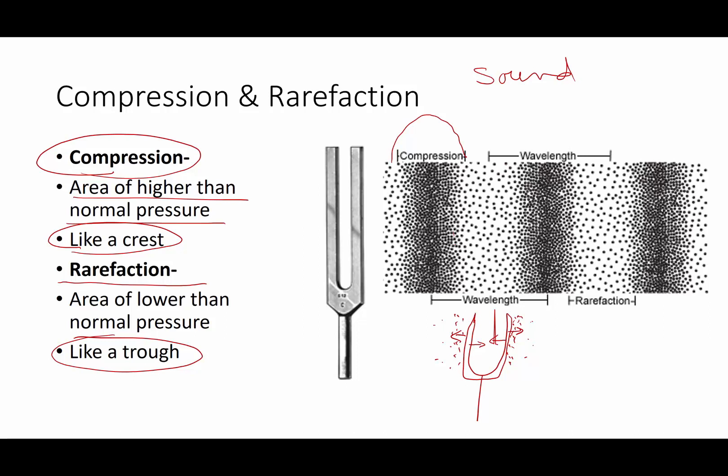Now, when the tuning fork oscillates inward, what happens is it leaves behind it an area of lower than normal atmospheric pressure. And those areas are referred to as rarefactions. A rarefaction is kind of like a trough in a transverse wave. These are areas with lower pressure and it corresponds to a trough of a transverse wave. This oscillation continues where the tuning fork pushes outward creating high pressure and then pulls inward creating low pressure. And these changing waves of pressure from compression to rarefaction travel through air and that is a sound wave.